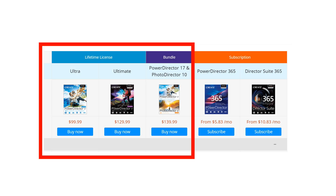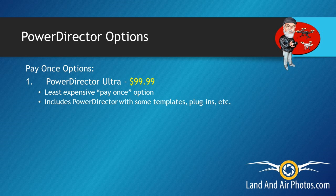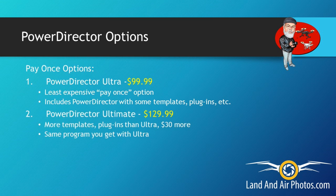Be sure to check current pricing at CyberLink.com as you consider your purchase. Let's start with the one-time purchase options. Ultra is the basic package for PowerDirector. It includes a good selection of templates, audio files, content packs and plugins — things that I rarely use but you might enjoy. This gets you the program at the lowest price for a one-time purchase. The Ultimate package normally costs $30 more than Ultra and adds some content packs and plugins, but the program itself is exactly what you get with the Ultra package.